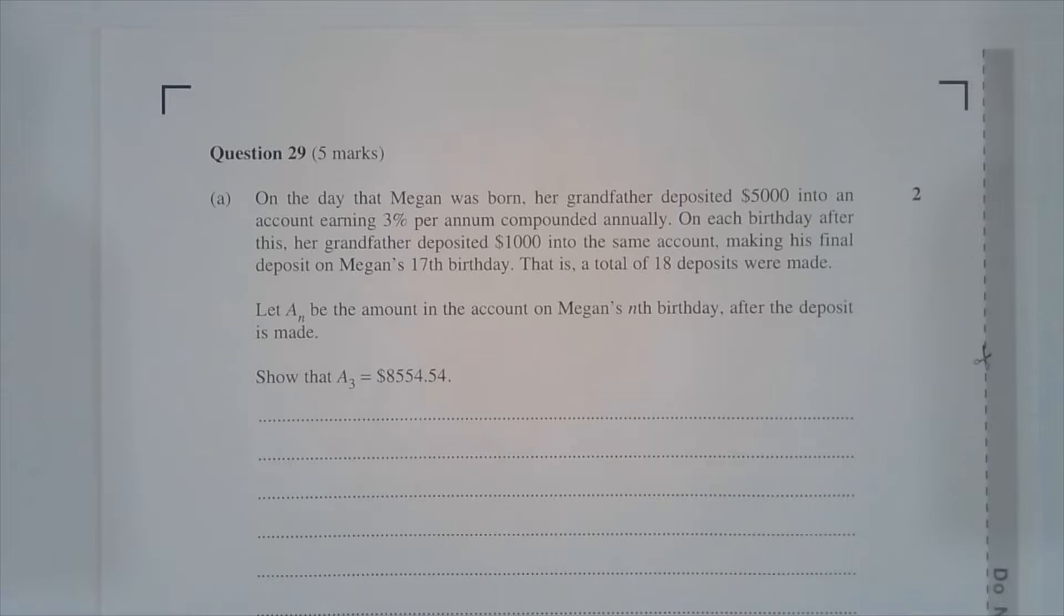Let AN be the amount in the account on Megan's nth birthday after the deposit is made. Show that A3 equals $8,554.54.